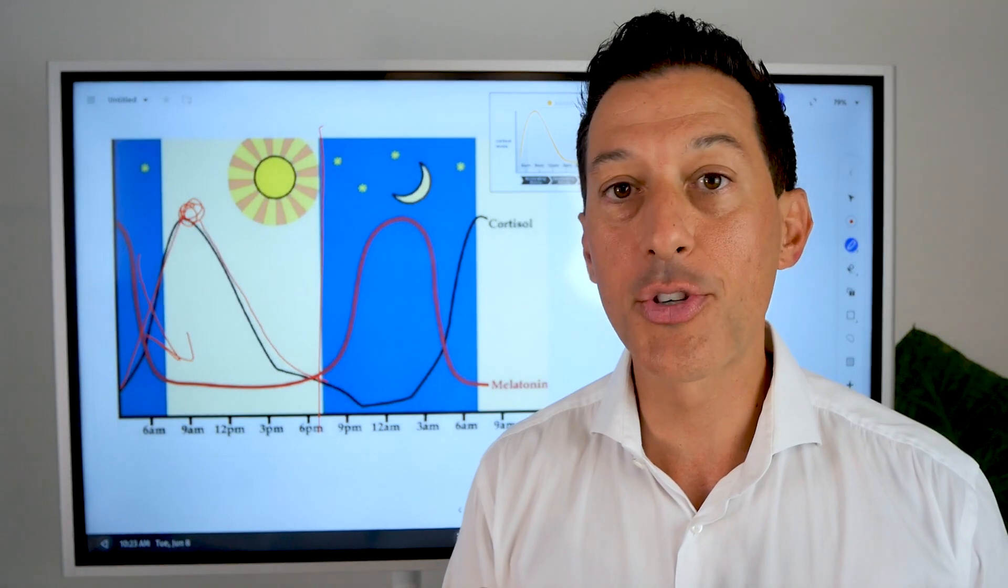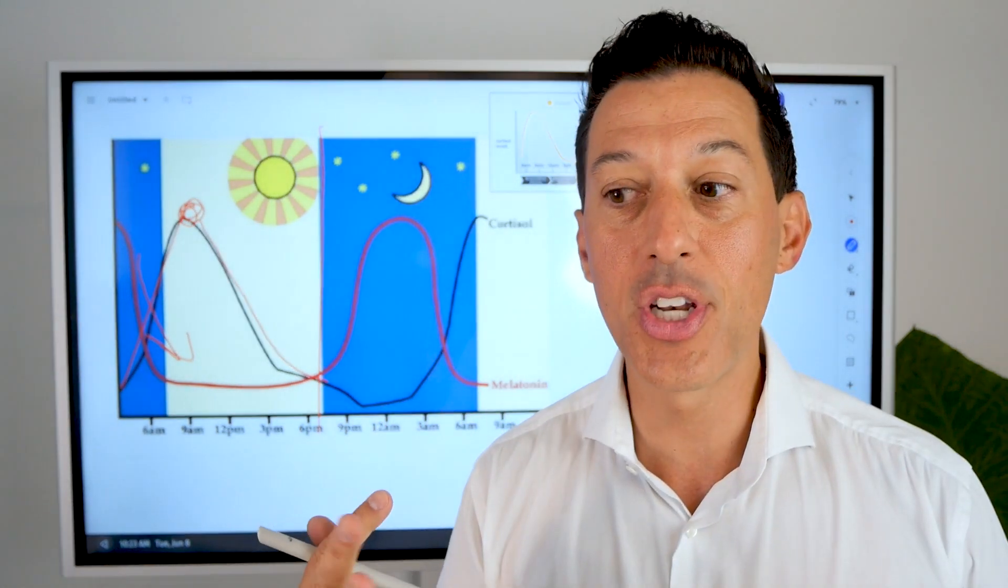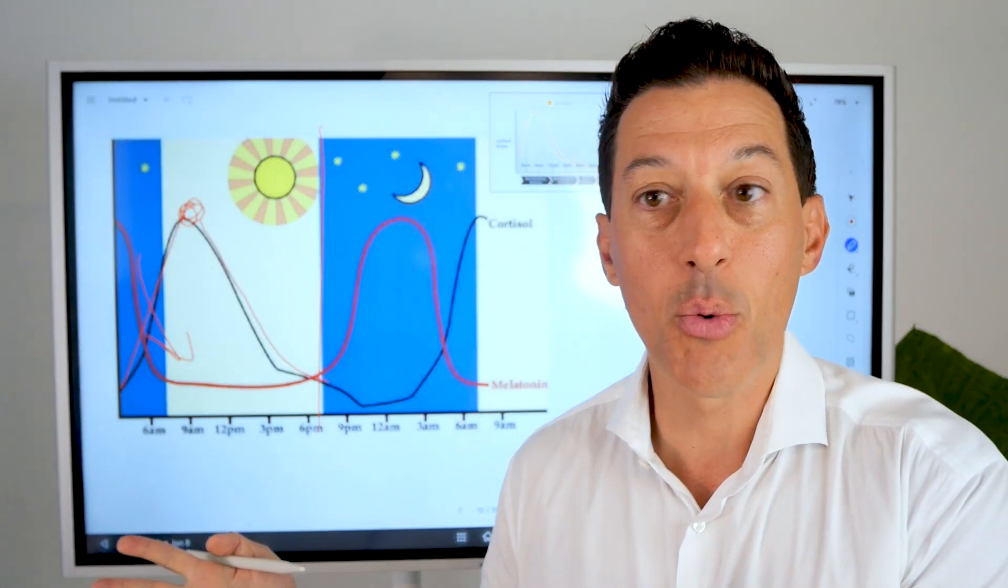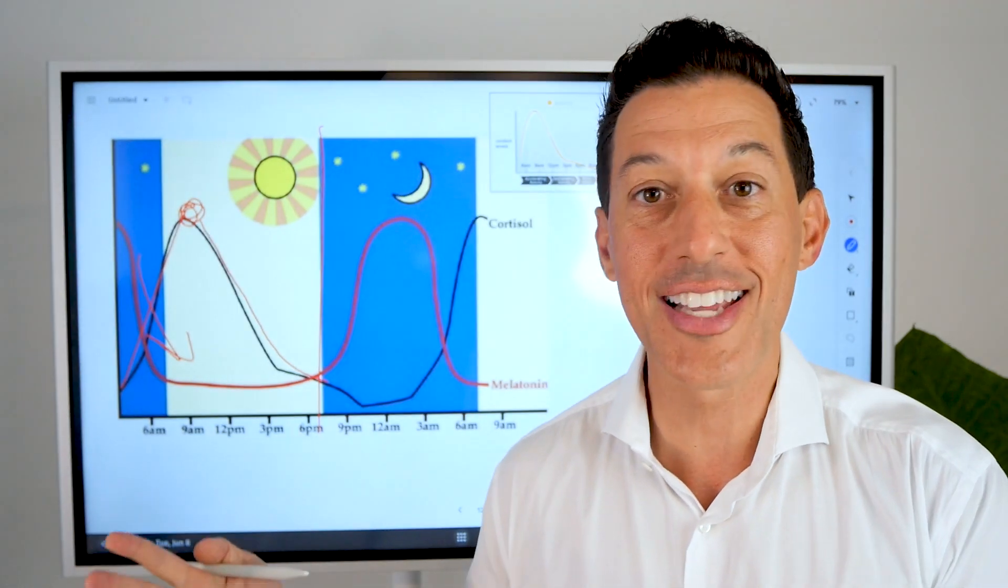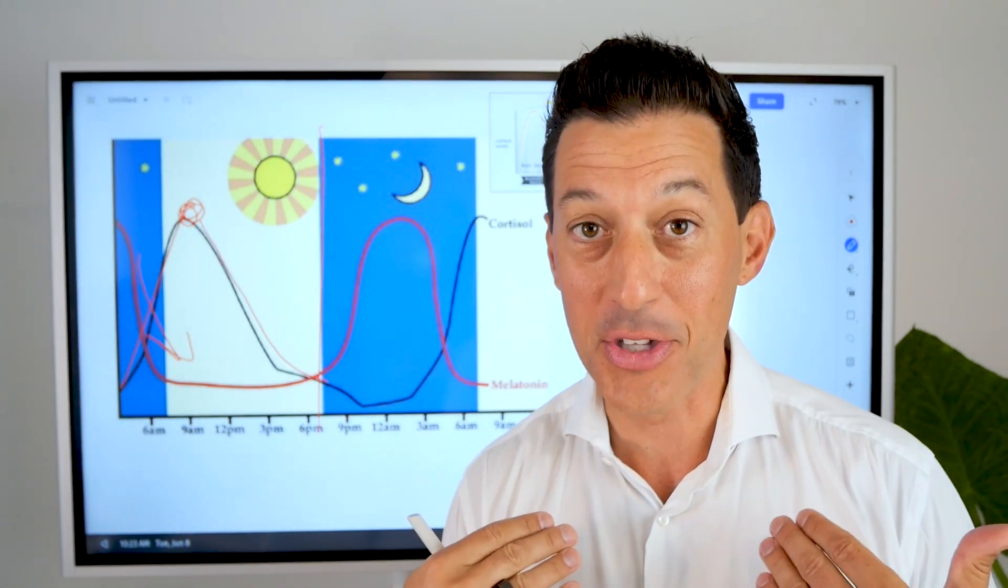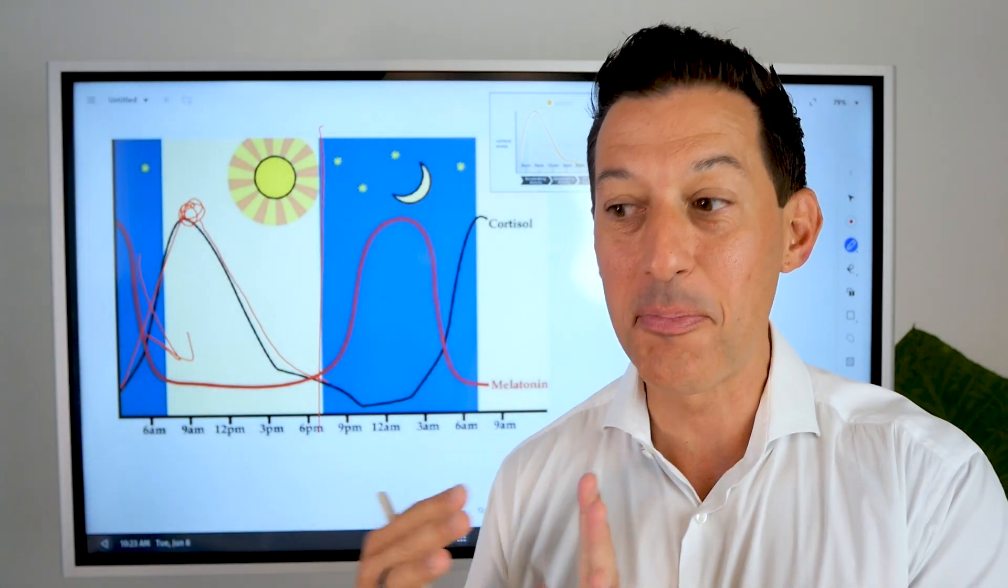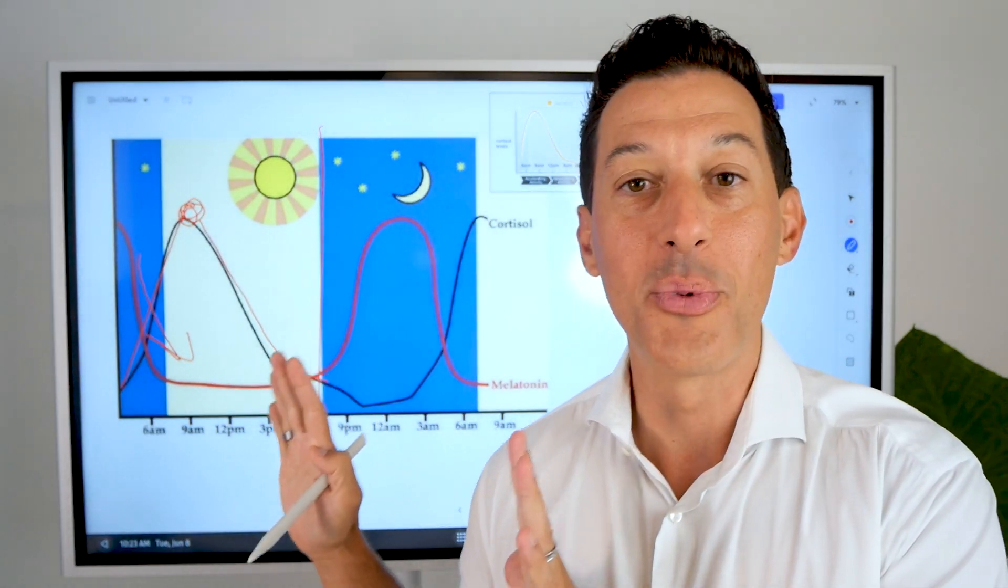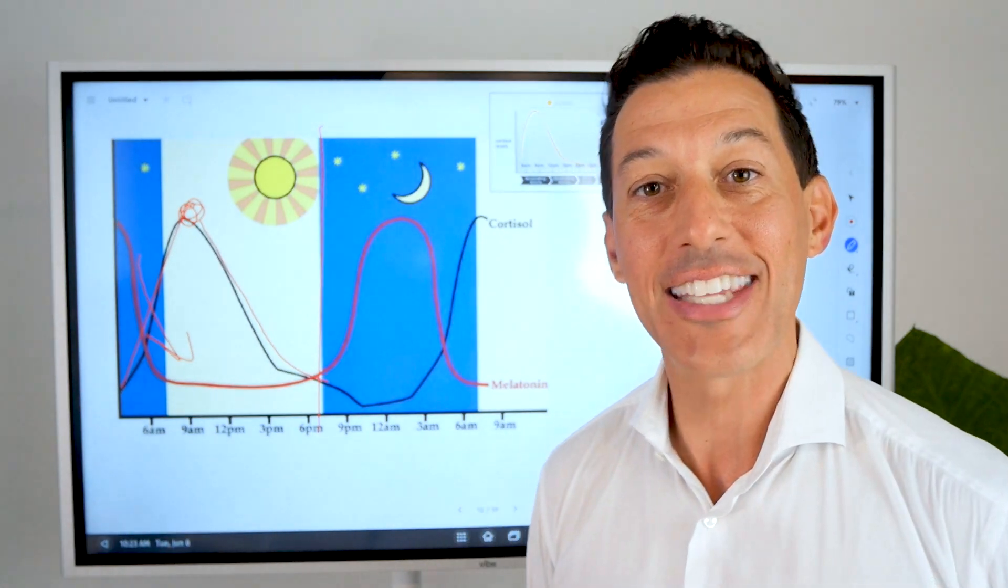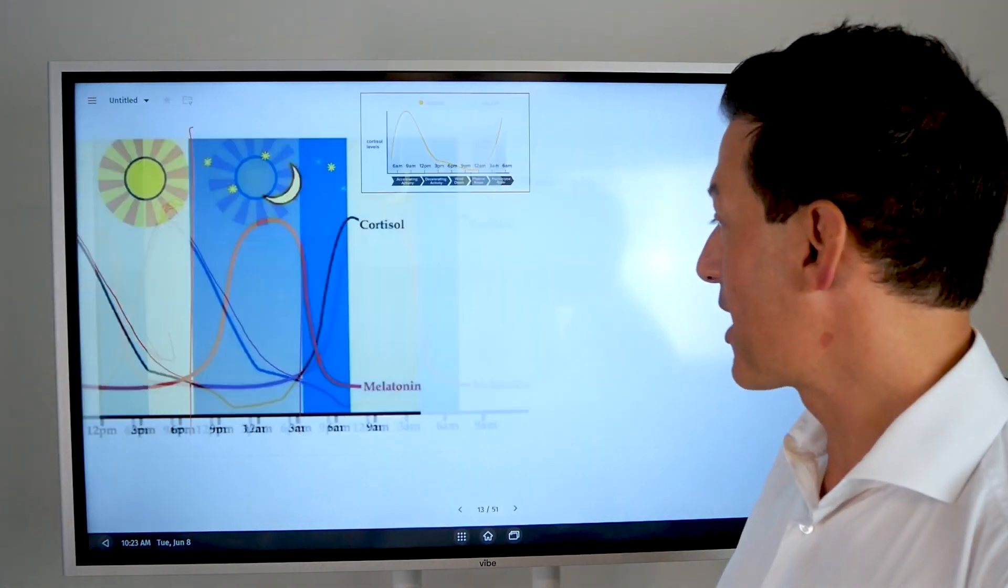We're not nocturnal. We don't have nocturnal vision. We're not prey-based hunters where we're hunting other animals during the middle of the night. We would be prey as humans during the middle of the night. We are meant to find shelter and be away from all harm when we can't see at night, right, like a cat.